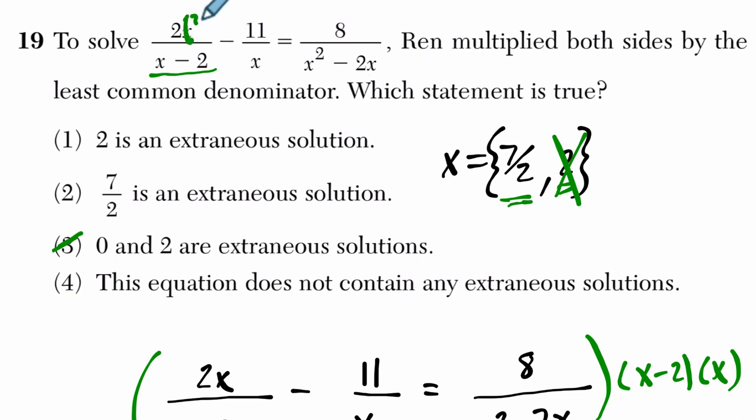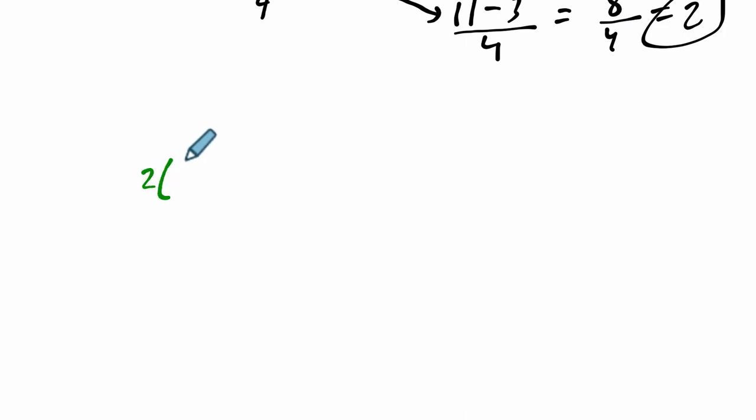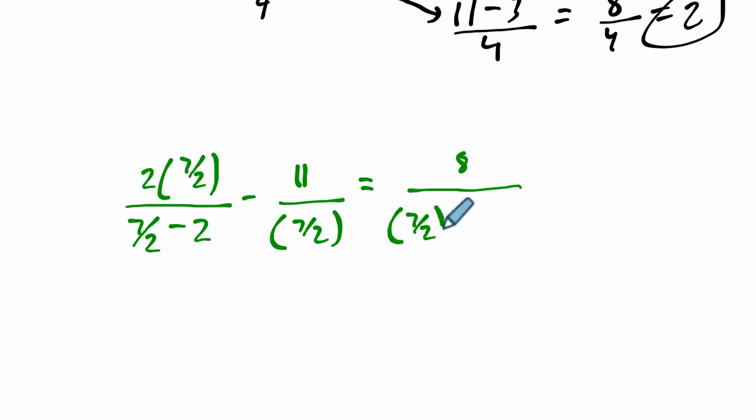So how do I do that? Well, 2 times 7 halves here. Do the math. And then down here we have 7 halves minus 2. This looks terrible. Let me scroll down and do it. Okay, so we have 2 times 7 halves. And that's not so bad. Those will cancel. 7 halves minus 2 minus 11 over 7 halves. That should equal 8 over 7 halves squared minus 2 times 7 halves. All right. So how do we do this? 2 times 7 halves, the 2s cancel. That's just 7. 7 halves minus 2 is really 7 halves minus 4 halves, which is 3 halves. And then minus 11 over 7 halves.